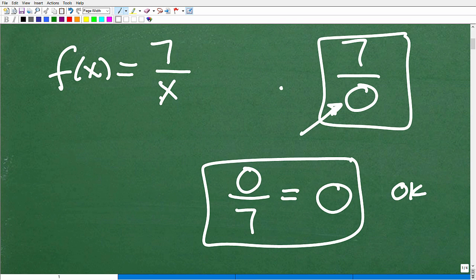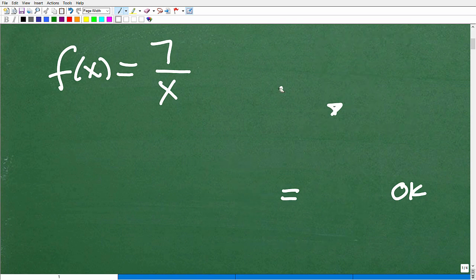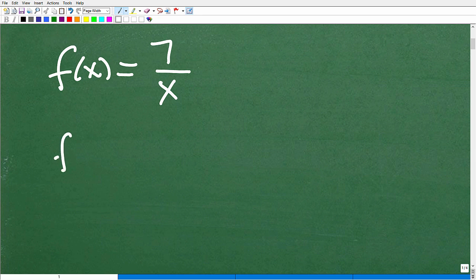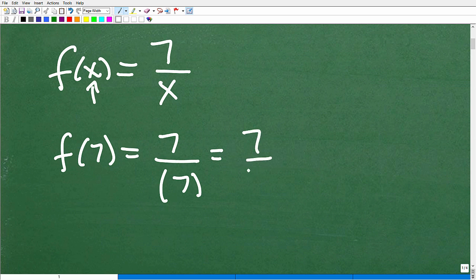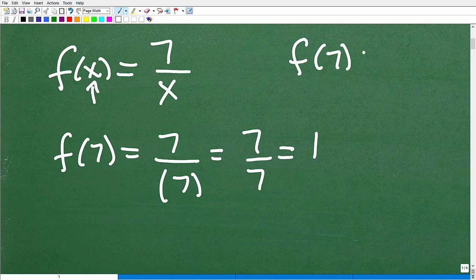So here's a function, and it's 7 over x. So basically, the way this works is the following. So if I want to know what f of 7 is, I'm going to plug in 7 for x. I'm going to replace this x with 7. So that's going to be 7 over 7, and 7 divided by 7 is equal to 1. So for this particular function, f of 7 was equal to 1. No problem.